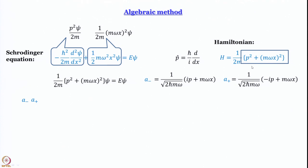What we are really trying to do now is write the Hamiltonian in terms of some new operators — operators that will make evaluation of the Hamiltonian very simple. These are the ladder operators. We have already defined them: a⁻ = 1/√(2ℏmω) · (ip + mωx), and a⁺ = 1/√(2ℏmω) · (−ip + mωx). We are not writing the hat explicitly, but please do not get confused about which quantities are operators.